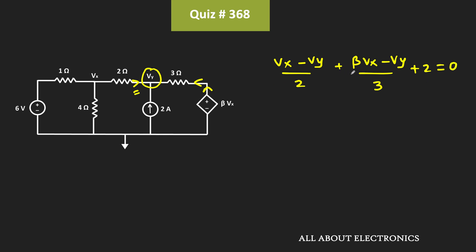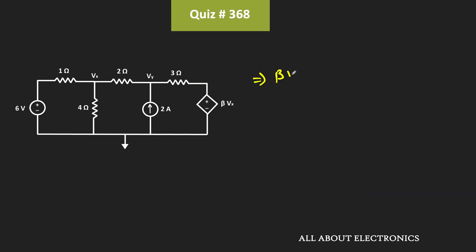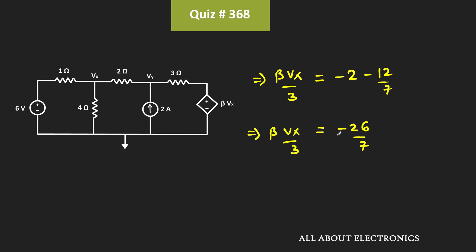Since we are finding the value of β when Vy is equal to zero, we will put the value of Vy as zero in this equation. That means: Vx divided by 2, plus βVx divided by 3, plus 2 equals zero. Or, βVx divided by 3 equals minus 2 minus Vx divided by 2. Since the value of Vx is 24 divided by 7V, this becomes minus 2 minus 12 divided by 7, which equals minus 26 divided by 7. Therefore, βVx divided by 3 equals minus 26 divided by 7.